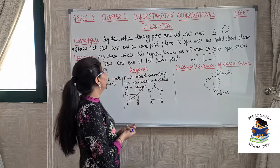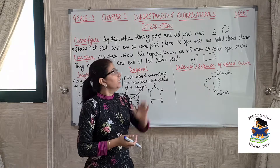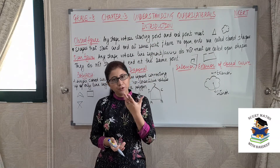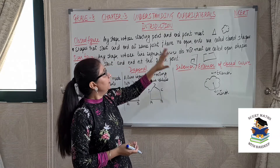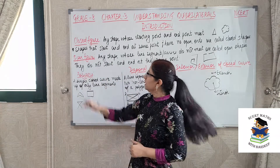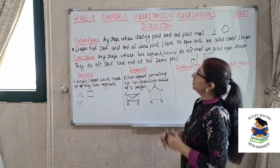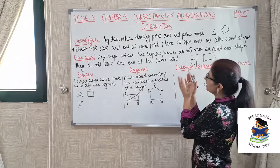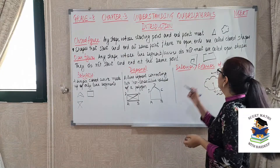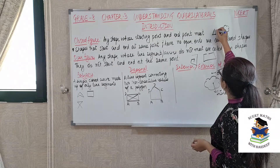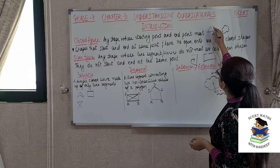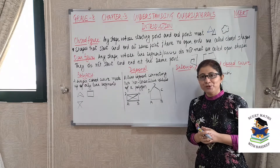So let's see first of all, what is a closed figure? As you already know, quadrilateral means any polygon which is of four sides. But before going into detail about the different types of quadrilaterals, we should cover all these topics. First one is closed figure. Any shape whose starting point and end point meet are called closed figures. For example, this triangle — it starts from this point and then ends also at the same point. This is a closed figure.